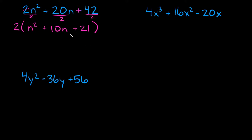As you can see, inside these parentheses we're now left with a quadratic equation that has a leading coefficient of 1 — there's no number there, so you can assume it's just a 1. So now we can factor this more easily. We have n squared plus 10n plus 21. Whenever you have a quadratic where the leading coefficient is 1, you want to find two numbers that multiply to this last number — positive 21 — and at the same time add up to this middle number, which is positive 10. Always start with multiplication.